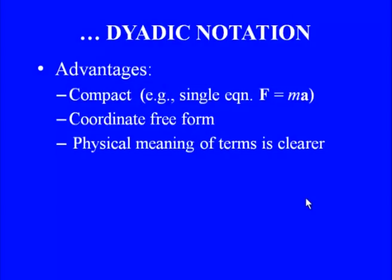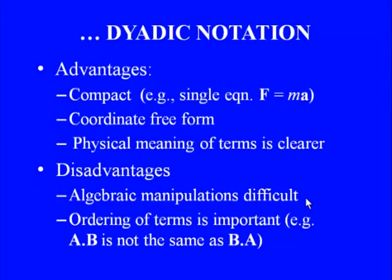The advantage of dyadic notation is a very compact form. Newton's second law in vector form is simply F = ma, whereas in component form it requires three separate equations: Fx = max, Fy = may, Fz = maz. Dyadic notation is also called coordinate-free form, and the physical meaning of terms is very clear — bold F indicates force, plain m is a scalar mass, and bold a is the vector acceleration.